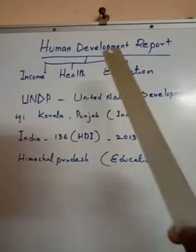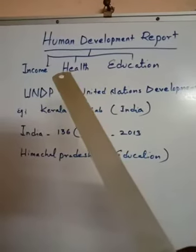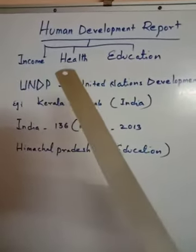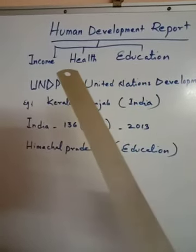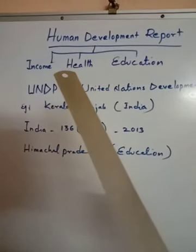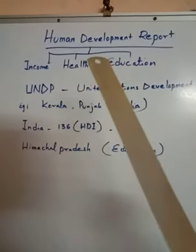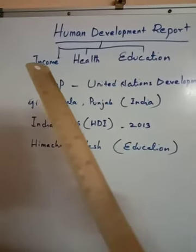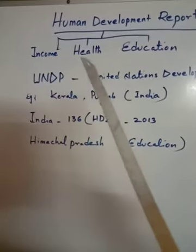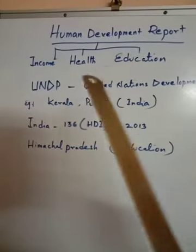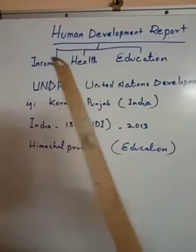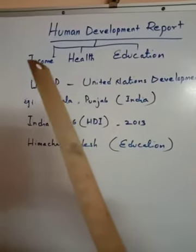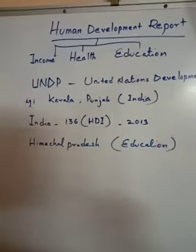This is the Human Development Report. To calculate the Human Development Report, we need income, health, and education. These are the correct measurements, so we should follow these components.